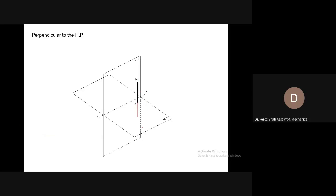Perpendicular to the horizontal plane. You can see this line is making an angle of 90 degrees with the horizontal plane, so this line is perpendicular to the horizontal plane. Now, if the line is perpendicular to the horizontal plane, it must be parallel to the vertical plane, because the two planes are orthogonal — perpendicular to each other.